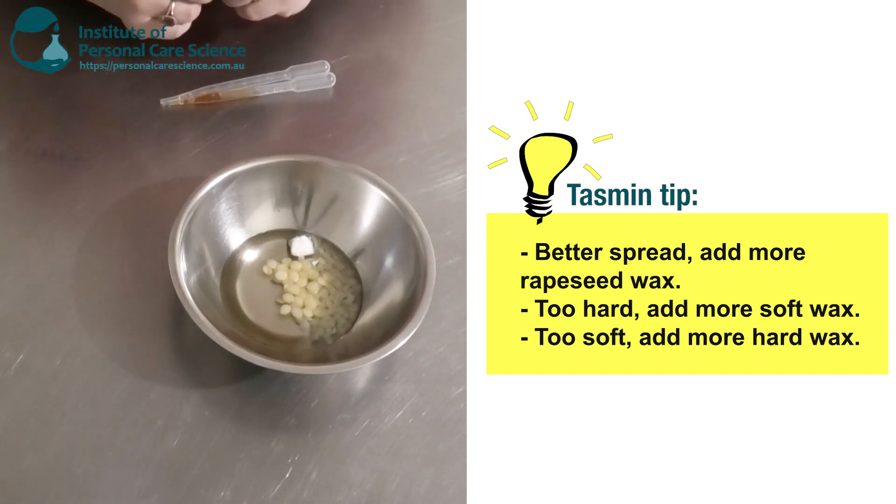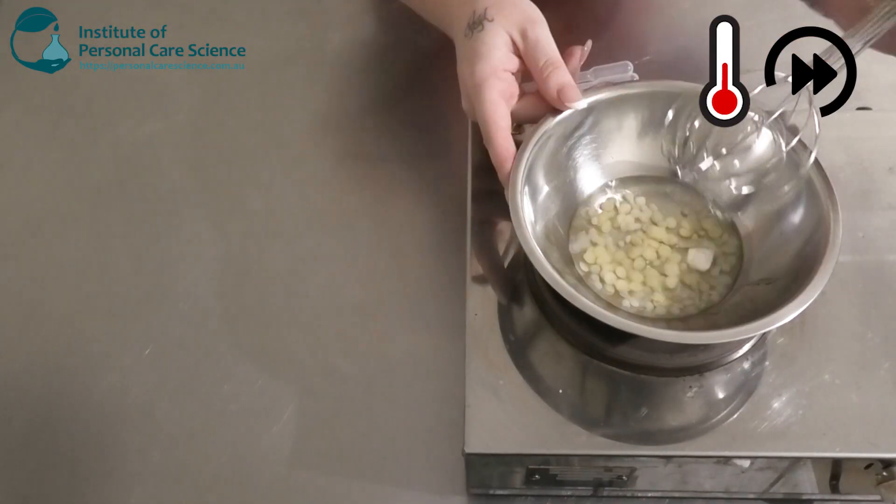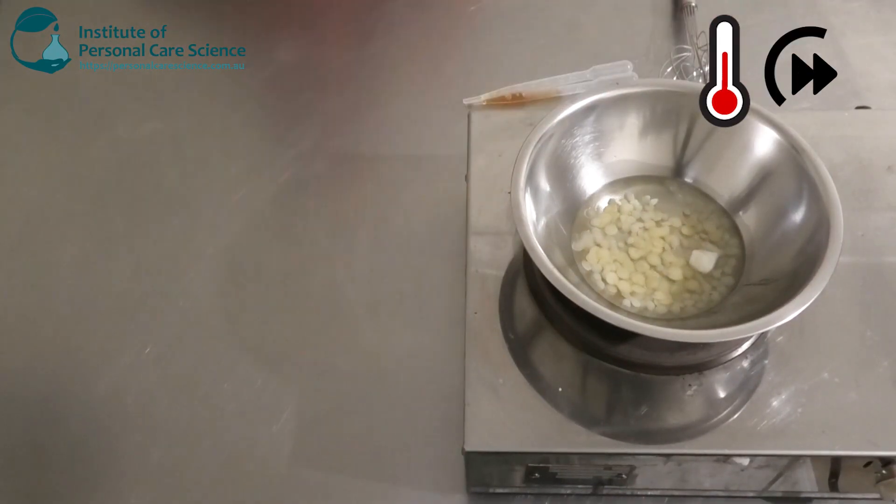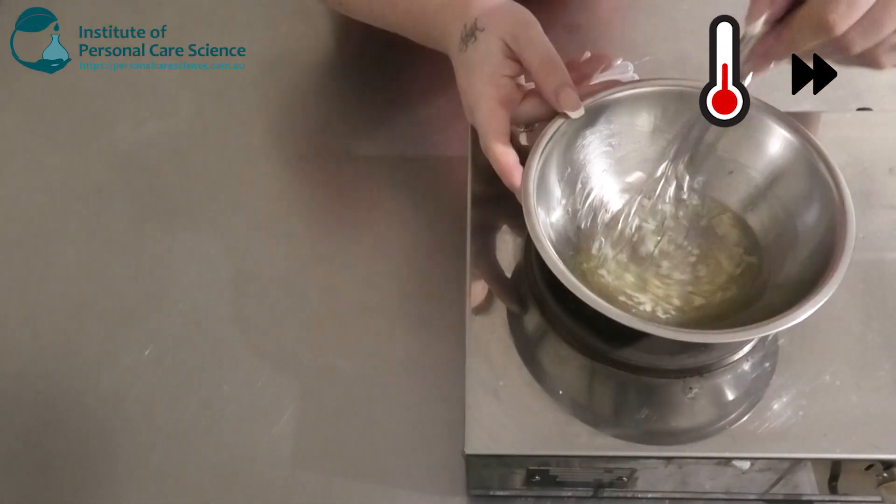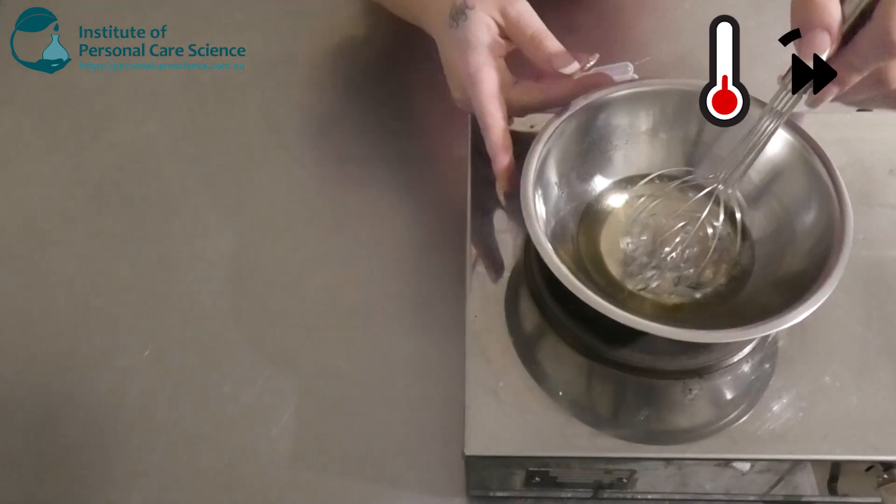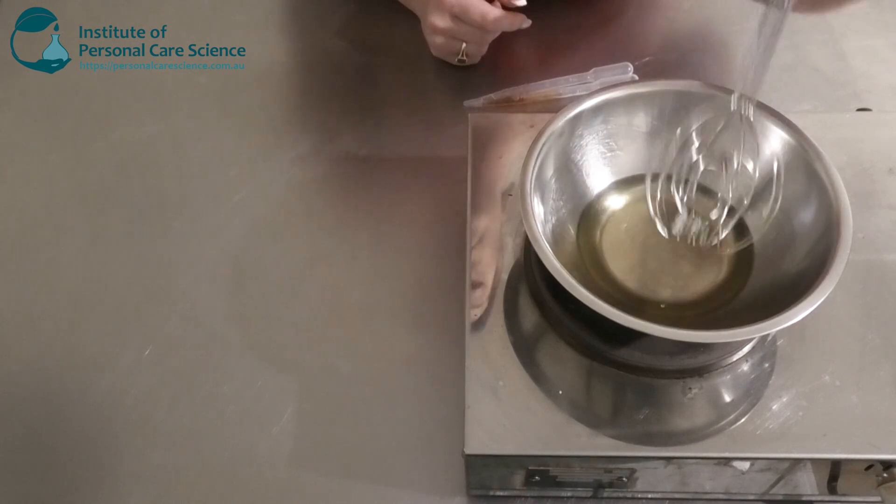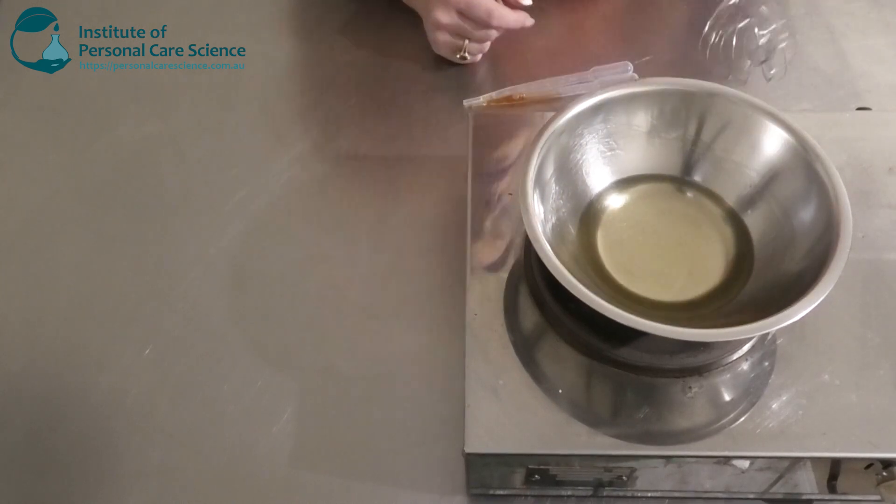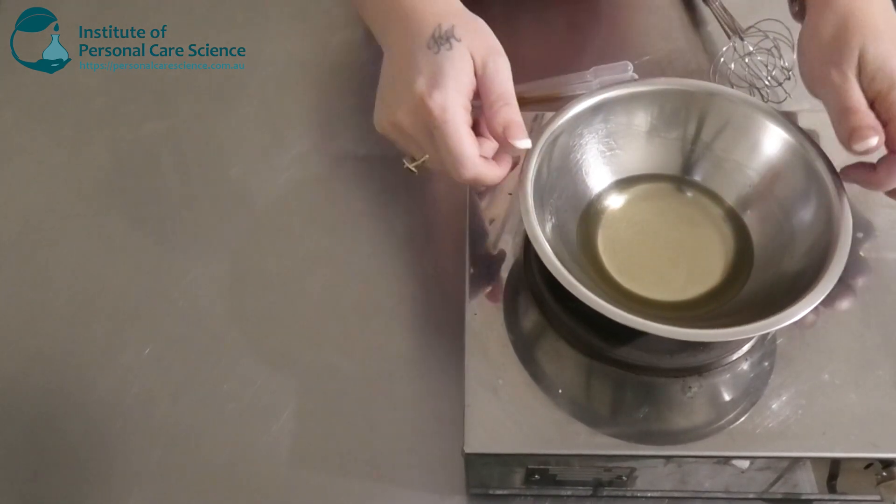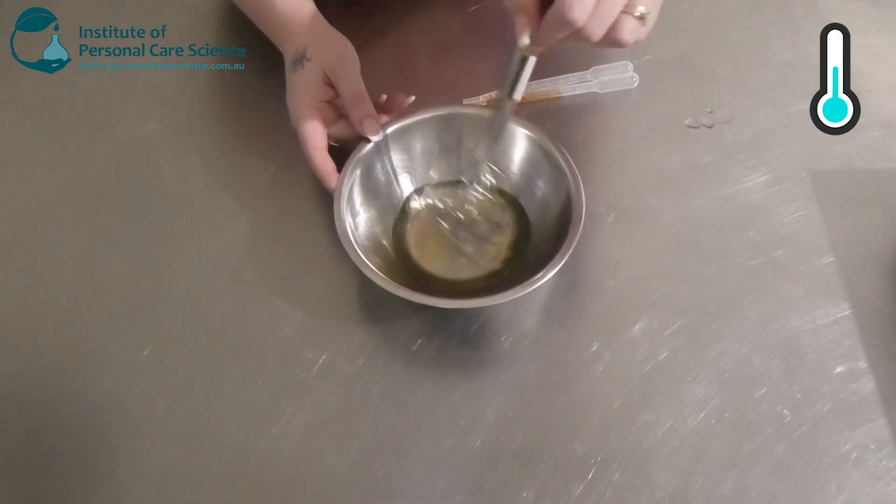Now I'm going to pop this on heat. Okay, so once all your waxes are melted and it's looking quite homogeneous, we're going to remove it from the heat and we're just going to stir it a bit to cool it.